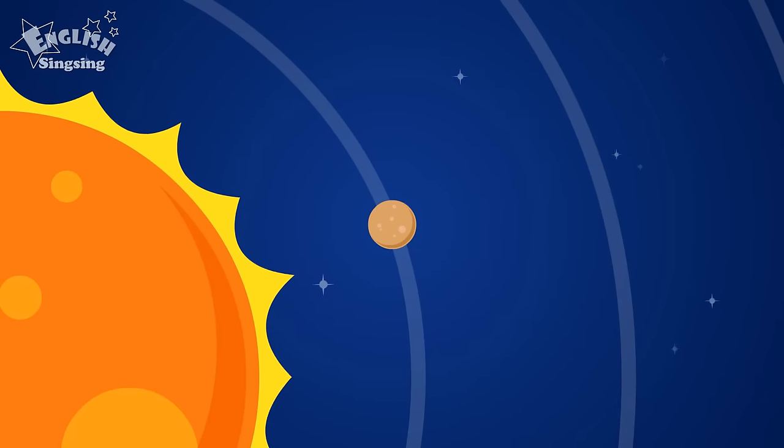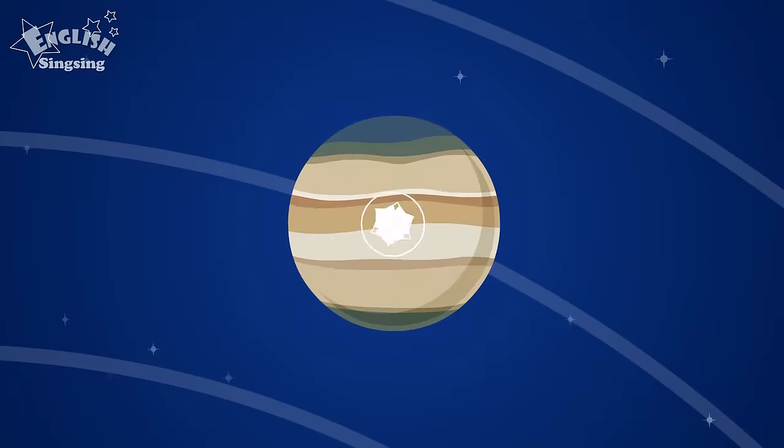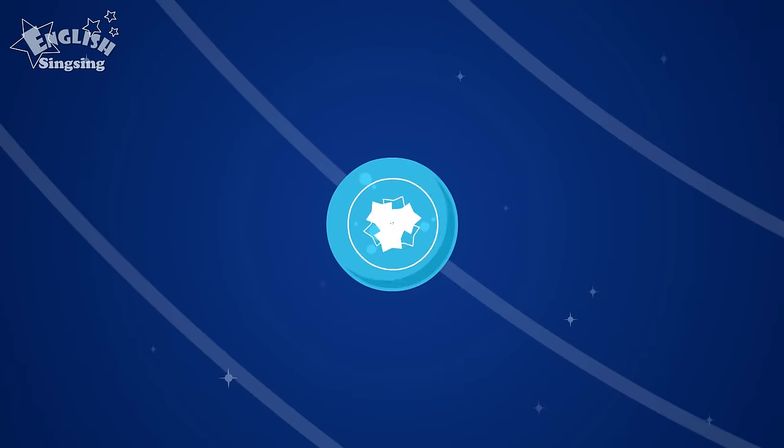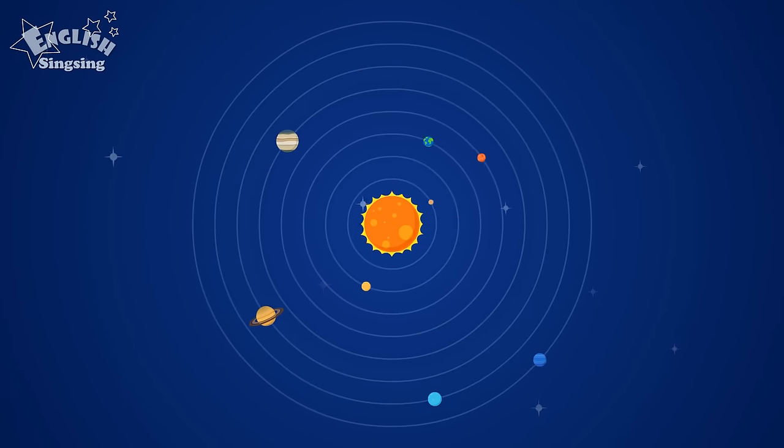There are Mercury, Venus, Earth, Mars, Jupiter, Saturn, Uranus, and Neptune. They go around the sun.